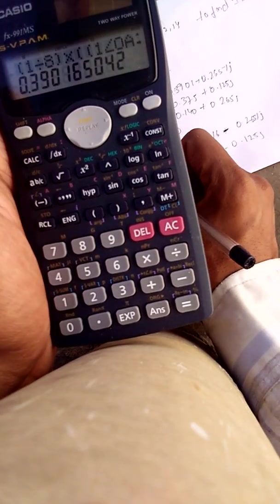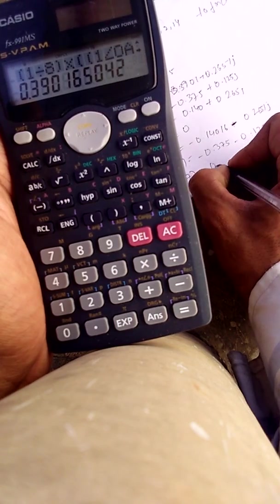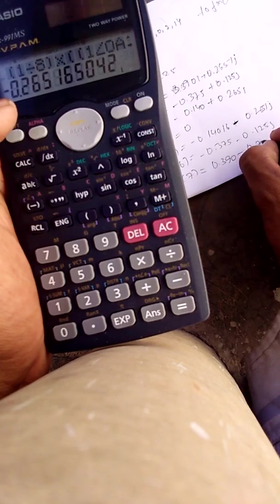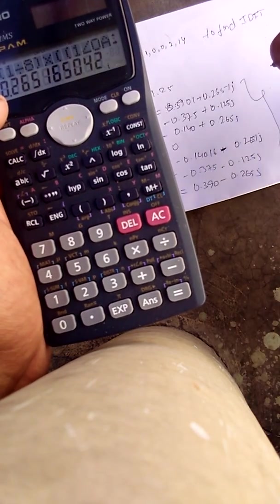Press Calc button and press 7. x(7) is equal to 0.390, Shift Equals, minus 0.265j.